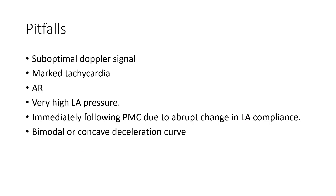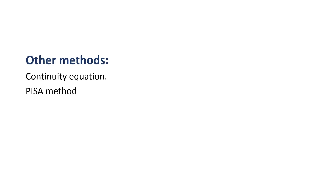The pitfalls of the pressure half-time method are that it is affected by the quality of the Doppler signal, marked tachycardia, the presence of aortic regurgitation, or very high left atrial pressure. It is also not very reliable immediately following PMC due to the abrupt change in left atrial compliance. Special attention must be given to the deceleration slope, especially when there is a bimodal or concave deceleration curve.